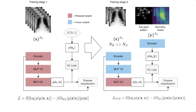In the second training step, we use only a small subset of data that contains object-level annotations. We freeze parts of the model that are already learned. The variational posterior stays the same; however, the variational prior will now be conditioned on the object-level annotations, causing our optimization objective to change.